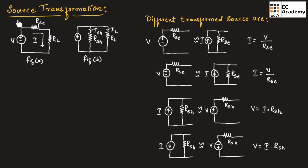In source transformation, we are converting one form of source into another form of source, which means a voltage source is transformed into a current source and a current source is transformed into a voltage source. Let us consider a voltage source having internal resistance RSE connected with a load resistor RL.